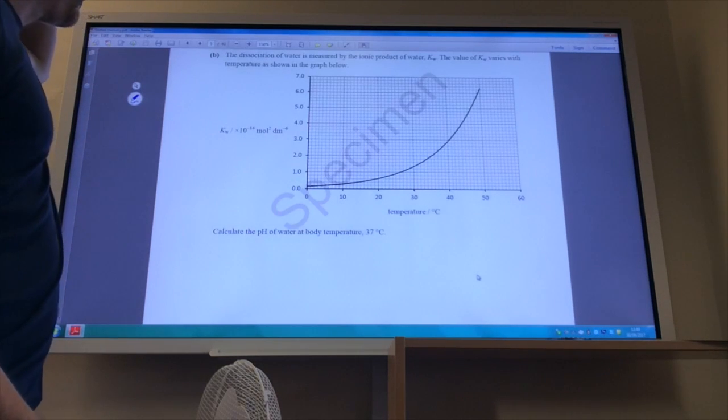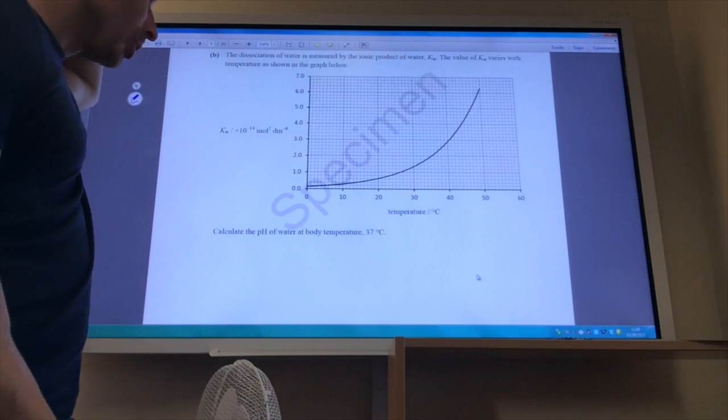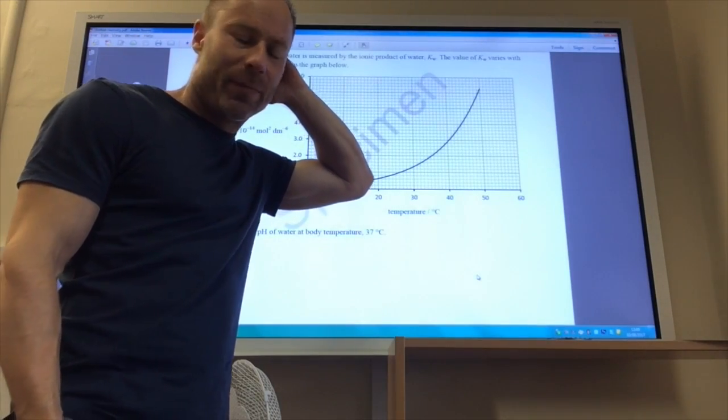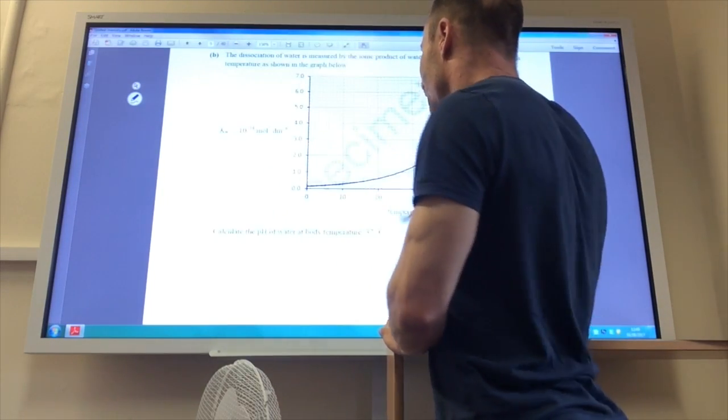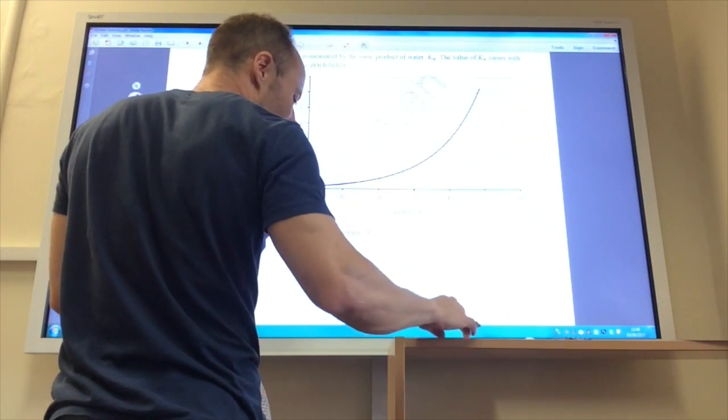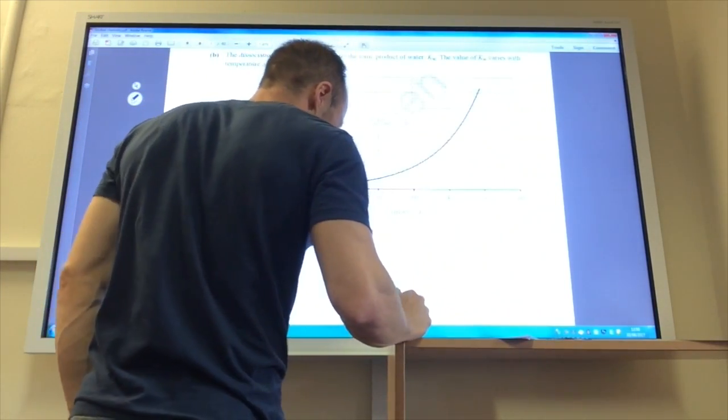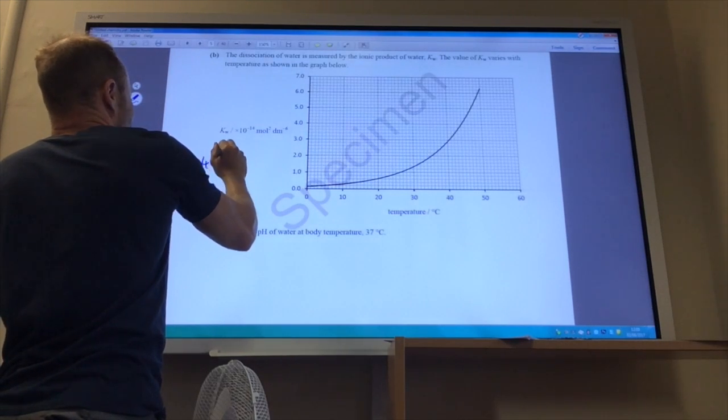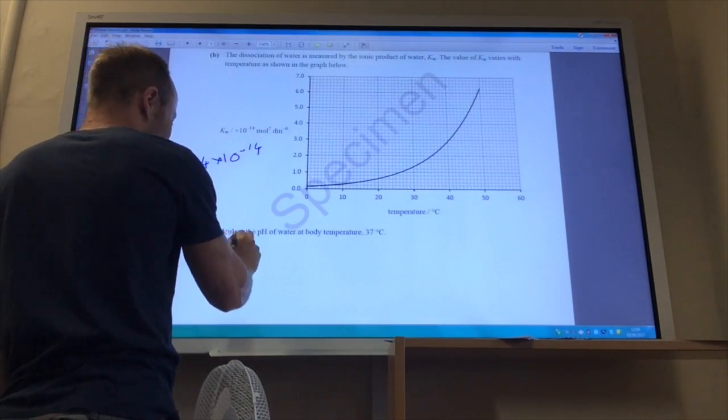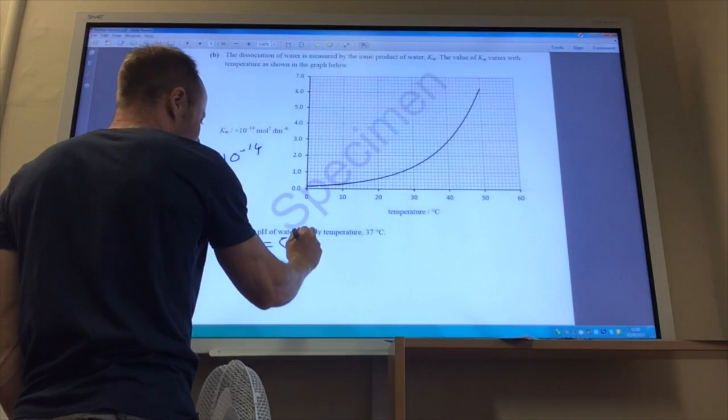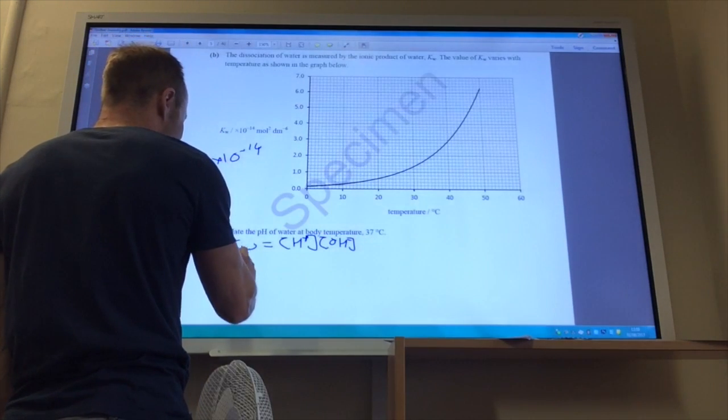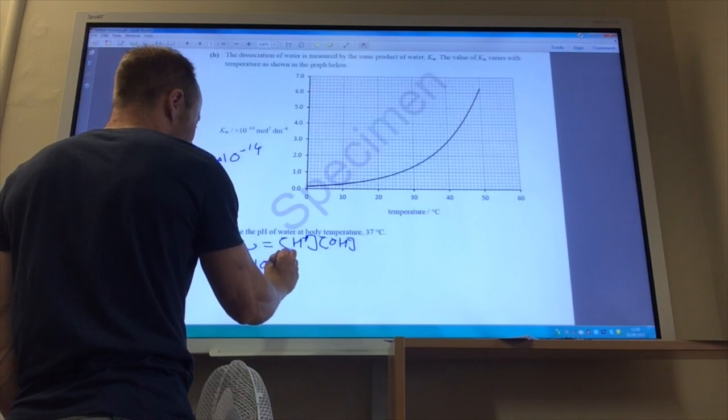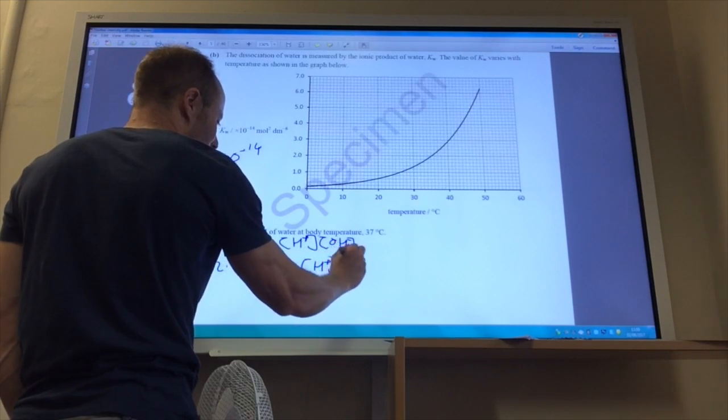The next one wants us to work out the pH of water at 37 degrees C. Remember, water, the pH of water varies depending on the temperature. And this shows how kW varies. So you find 37 degrees C on the graph. Go across and you will find that your value is 2.4 times 10 to the minus 14. So that's kW. kW is equal to the concentration of H+ times the concentration of OH-. Water is neutral, so these two are the same. So we can say 2.4 times 10 to the minus 14 is equal to the concentration of H+ squared.